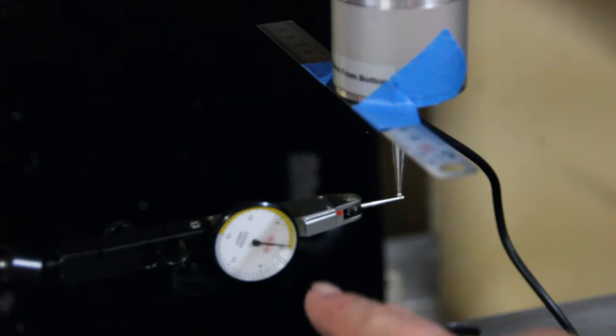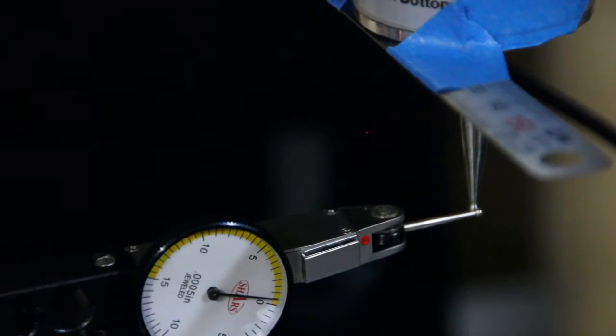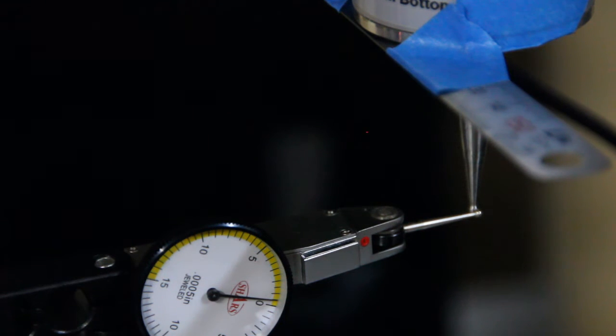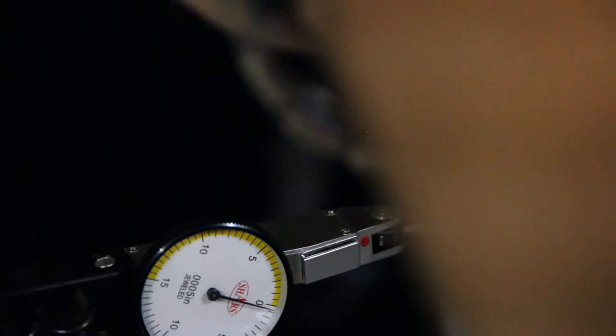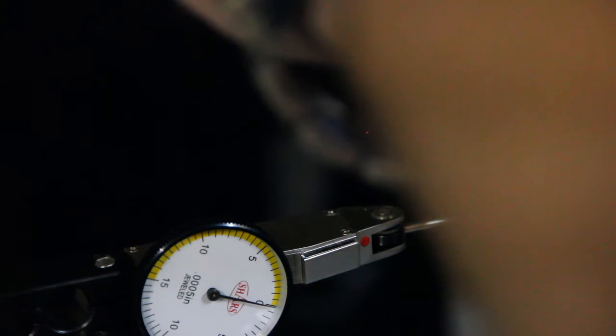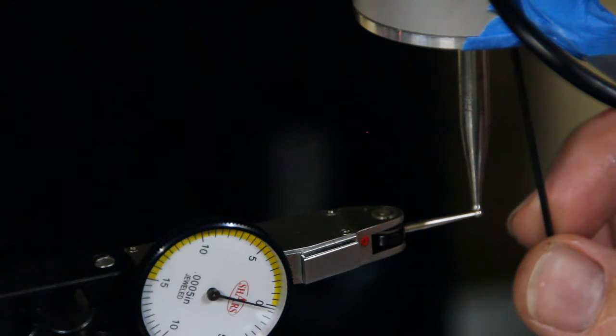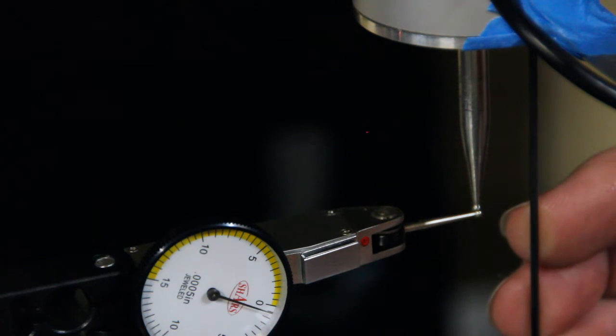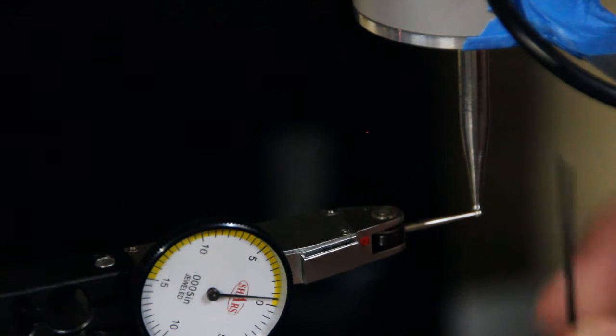So I've got it so it's front and back here. Turn the brake off. Spin it 180 degrees. And I'm off by a half a thousandth. Can you see that?